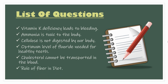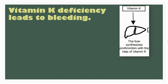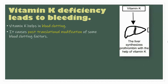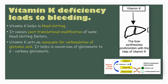Let us begin with vitamin K deficiency leads to bleeding. Vitamin K helps in blood clotting. It causes post-translational modification of some blood clotting factors. Vitamin K acts as a coenzyme for carboxylation of glutamic acid, helping in the conversion of glutamate to gamma-carboxyglutamate.